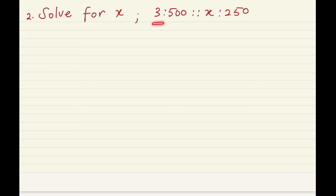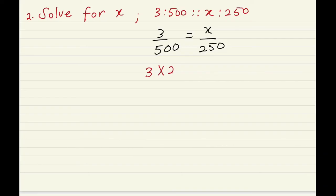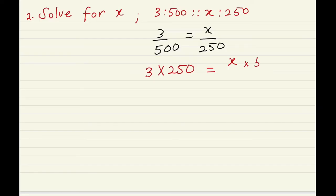For number 2, it says solve for x: 3 is to 500 as x is to 250. We're going to rewrite this as 3 over 500 equals x over 250. Once you get to this stage, all you want to do is cross multiply. We're not canceling out — we're just cross multiplying. So it becomes 3 times 250 equal to x times 500.